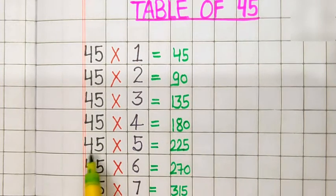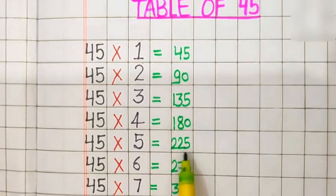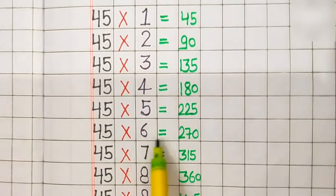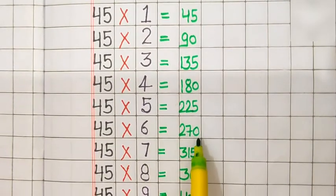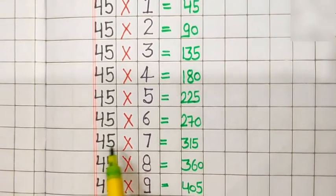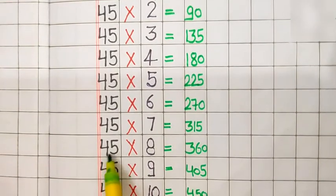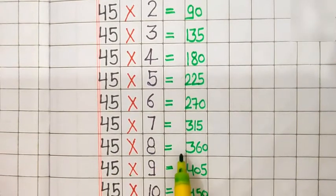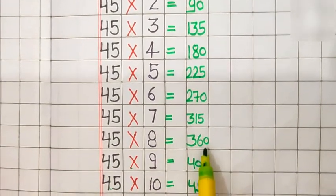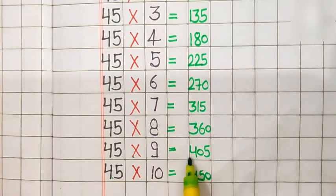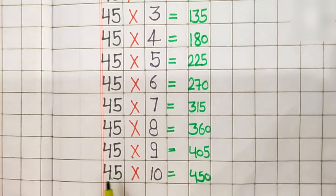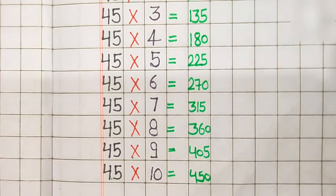45 fives are 225. 45 sixes are 270. 45 sevens are 350. 45 eights are 360. 45 nines are 405. 45 tens are 450. Ok, thank you.